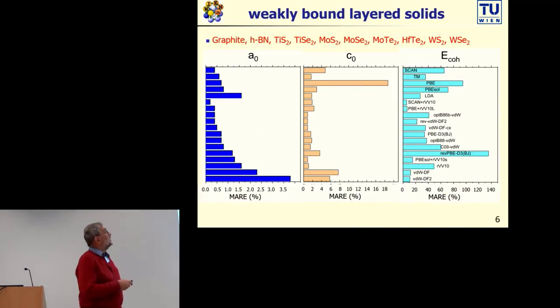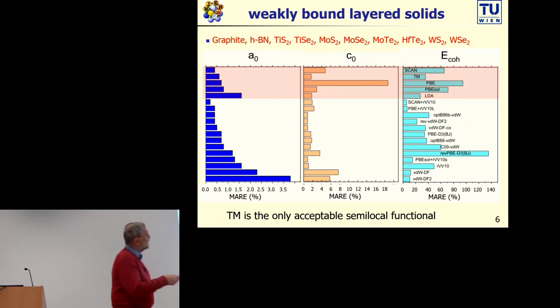If we go for instance just as one example to weakly bound layered materials, the average error for semi-local functionals: you can see that for instance our well-known PBE functional is a disaster in terms of the C lattice parameter, overestimating it tremendously. But the tau and mo, tm meta-GGA, is probably the only acceptable semi-local functional in this test which has decent errors in the strongly bound region, in the weakly bound region, and also a reasonable error in the cohesive energy.